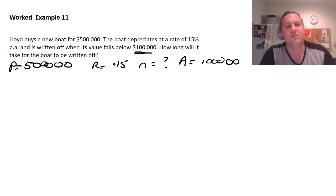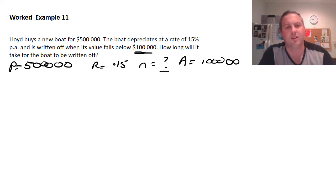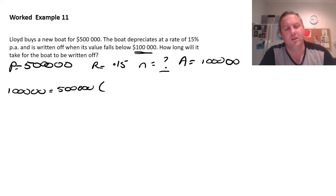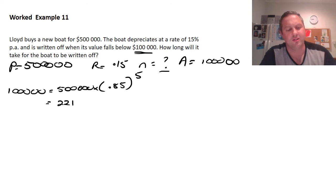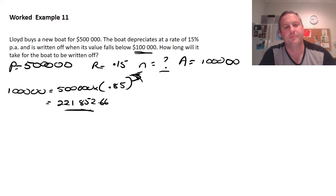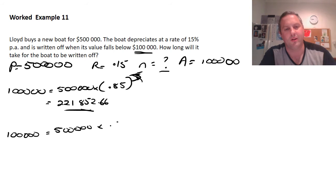Because n is unknown, we use trial and error, substituting different values until we get below $100,000. First, we try n = 5: A = 500,000 × (0.85)^5. The calculator gives $221,852.66, which is well above $100,000, so n = 5 does not work. Next, we try n = 10: A = 500,000 × (0.85)^10.